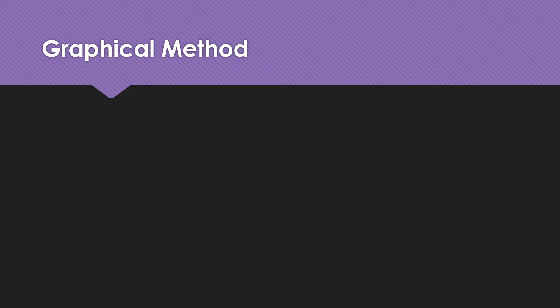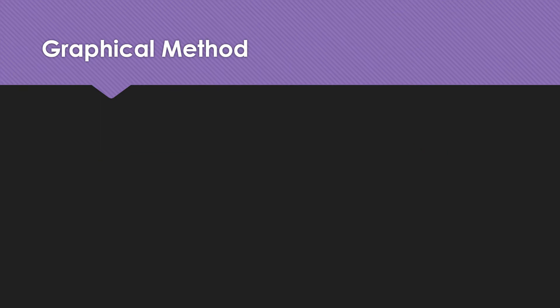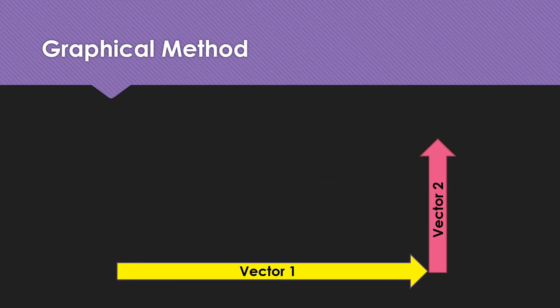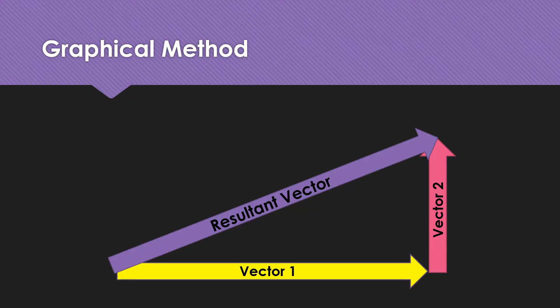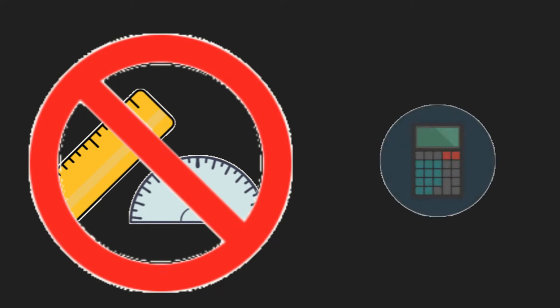As a review, last time we discussed the graphical method. We plotted the vector so that we could find the resultant vector. Last time we used a ruler and protractor, but for today, we will only use a calculator.